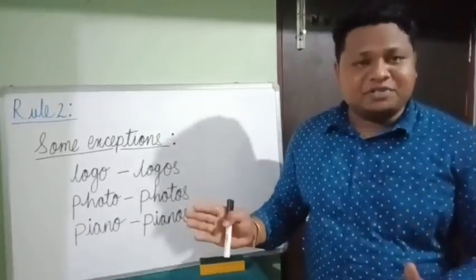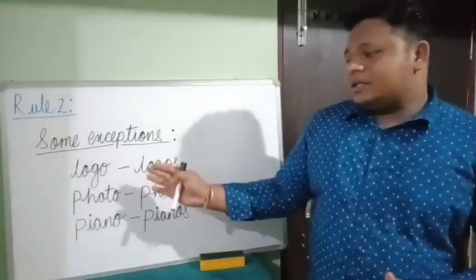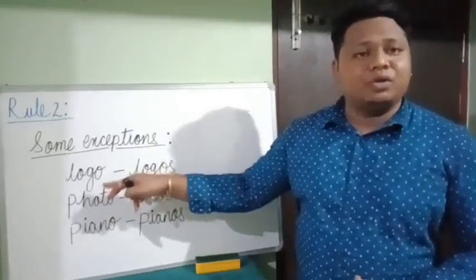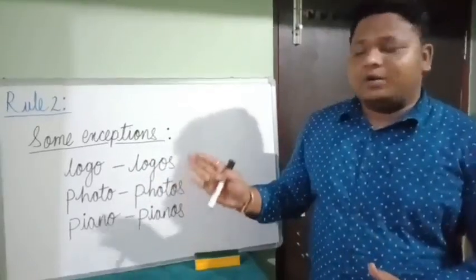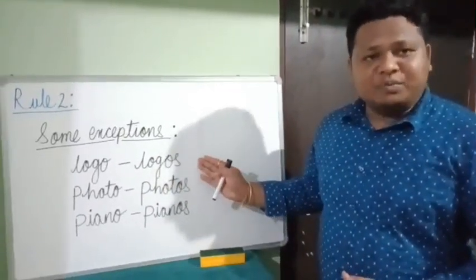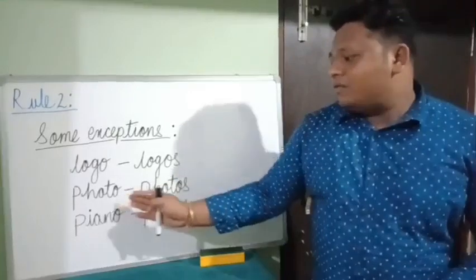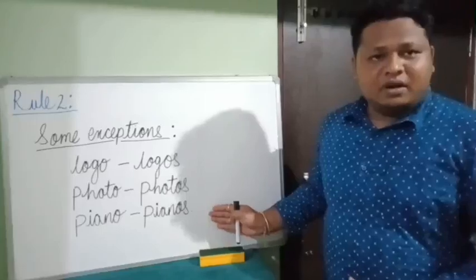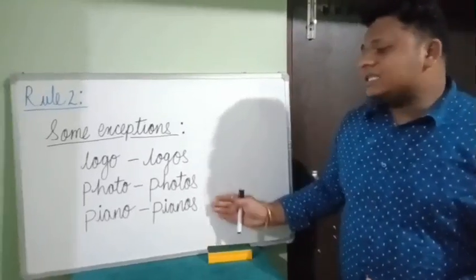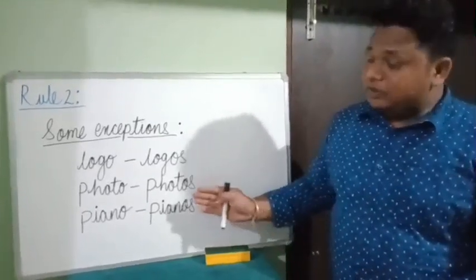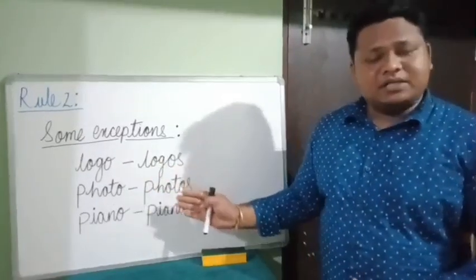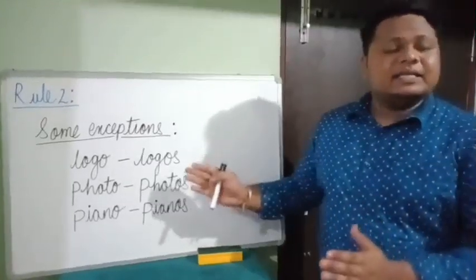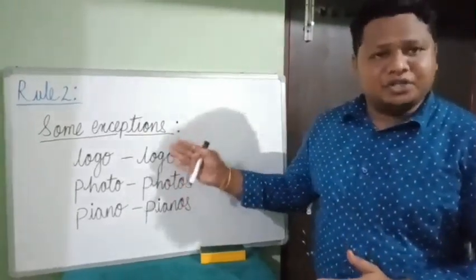But there are some exceptions in condition two. For example, logo — we have G, a consonant before O, but we still add S: logos. Photo — photos. Piano — pianos. So we are adding S here to make the plural form even though there is a consonant before O. These are some exceptions in rule number two.